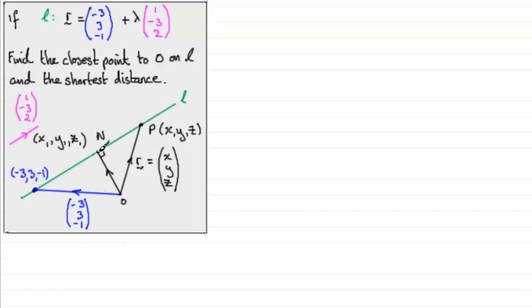Now, if N is a point on the line L, then x1, y1, z1 must satisfy the equation of the line. In other words, we can say that x1, y1, z1, that's r, in other words, must equal (-3, 3, -1) plus some amount, we'll call it lambda then, in the direction of the vector (1, -3, 2).